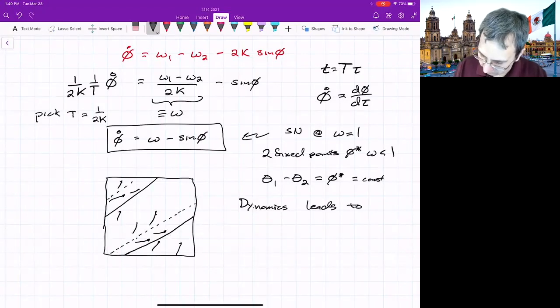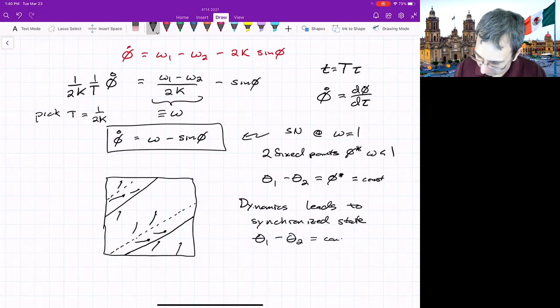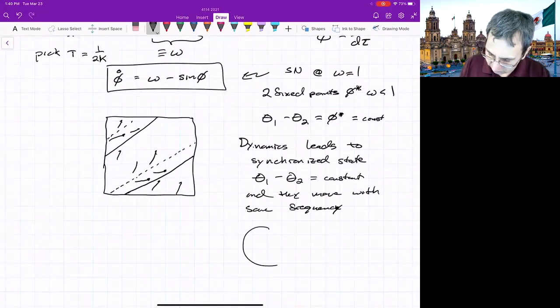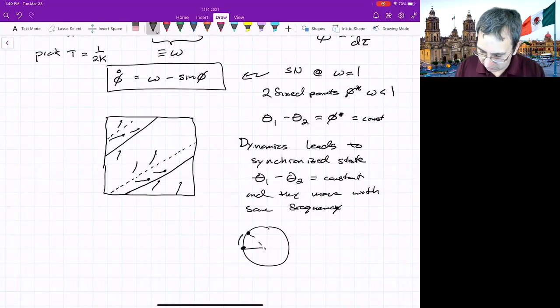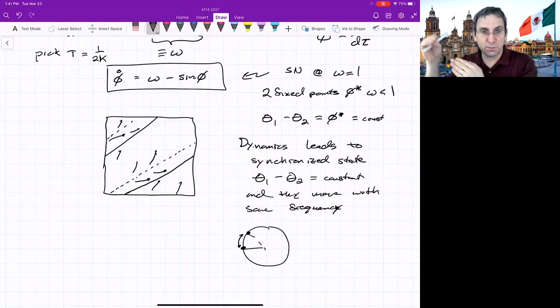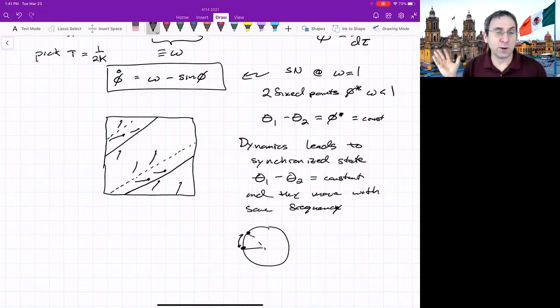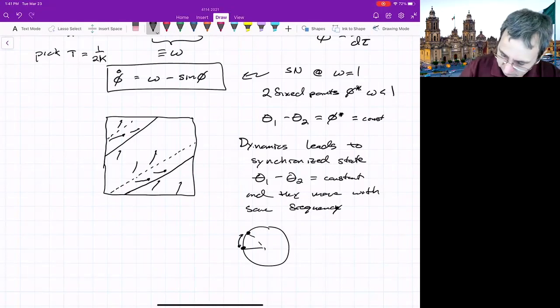So everything will eventually end up at this synchronized state, meaning the distance between the two is the same and they're moving with the same frequency. Dynamics leads to a synchronized state where theta one minus theta two is a constant and they move with the same frequency, just phase shifted. So if you think of the picture of the two friends, they'll keep a constant distance and just sort of move. No matter what the initial condition is, you will end up at this synchronized state. So we call these synchronized oscillators and it plays a role in some types of phenomena. It's also called phase locked or synchrony.